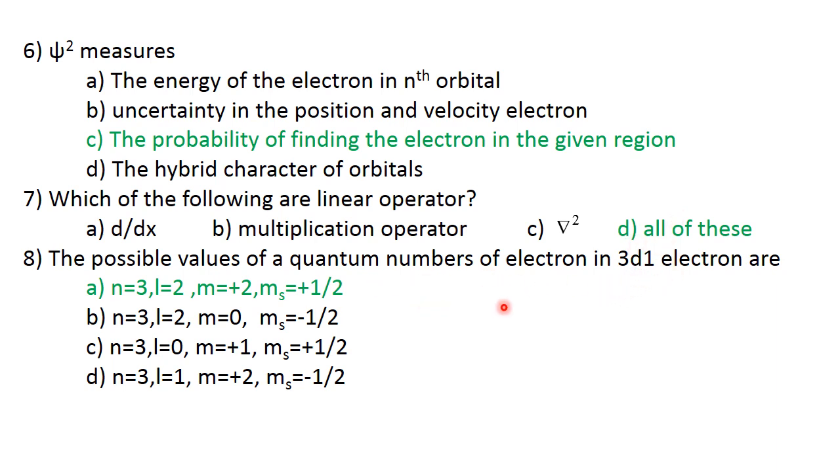The possible values of quantum numbers of an electron in the 3d orbital: if 3d, then n equals 3, l equals 2, m equals plus 2, ms equals plus half. These are the correct four quantum numbers when an electron is present in 3d orbital.